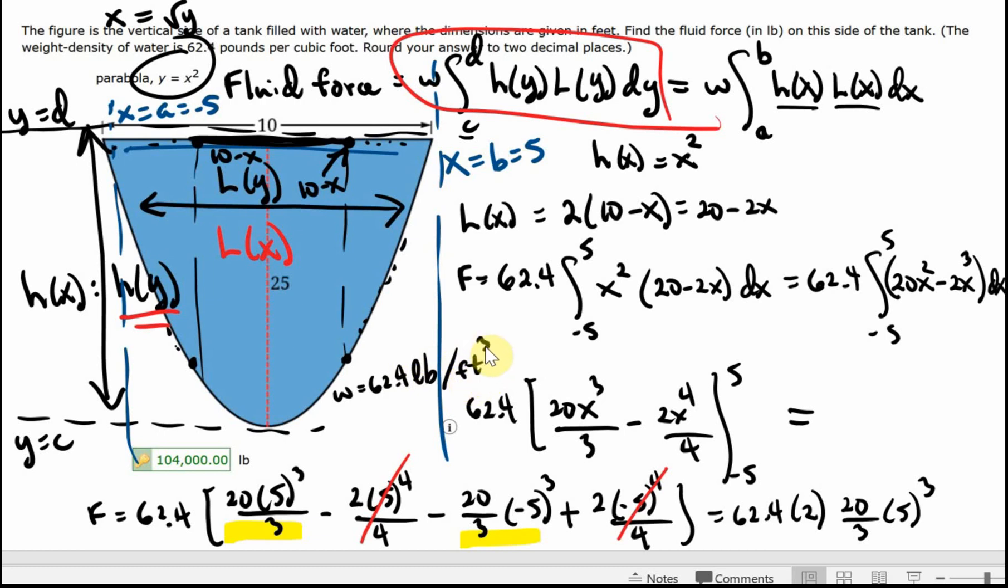The feet cancel out because this height is in feet, this length is in feet, so we have feet cubed times feet cubed in the denominator. It's 104,000 pounds. So hopefully that doesn't confuse you, but I thought converting that to dimensions of X would make things a little bit easier to digest.